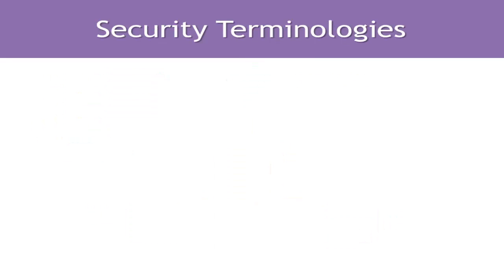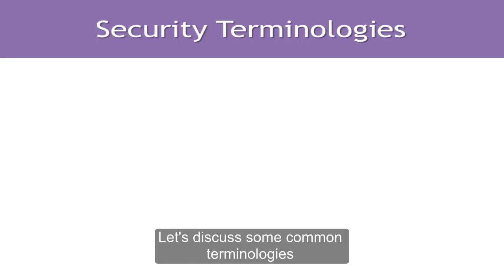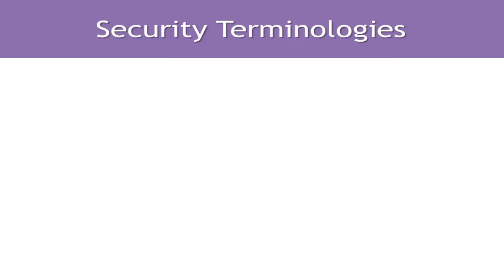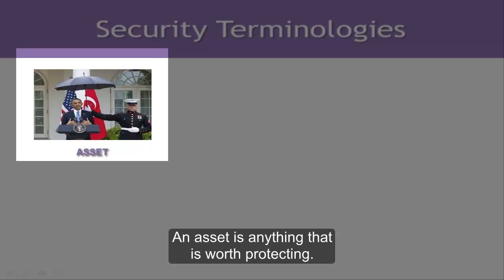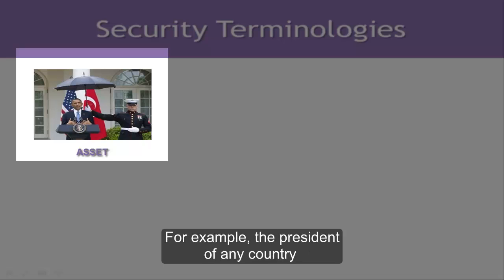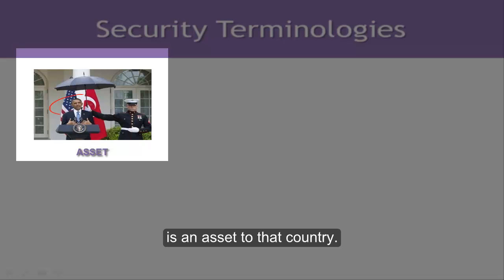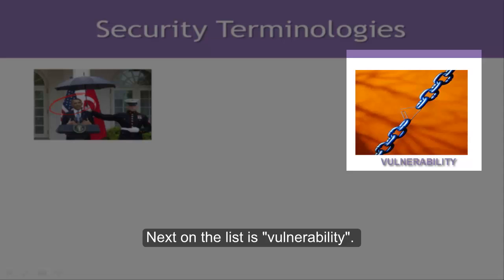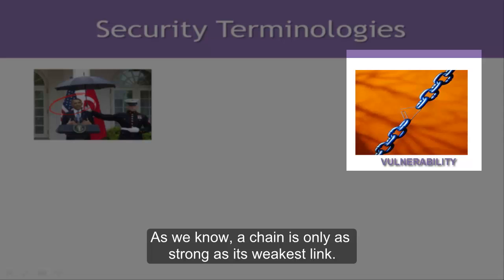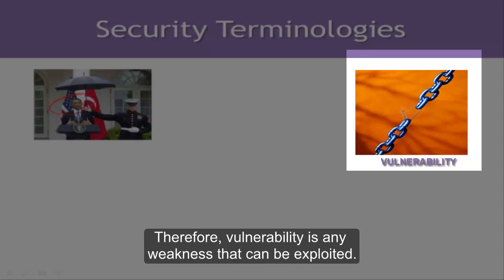Let's discuss some common terminologies in the security sphere. The first is asset — an asset is anything that is worth protecting. For example, the president of any country is an asset to that country. Next is vulnerability. As we know, a chain is only as strong as its weakest link, so a vulnerability is any weakness that can be exploited.